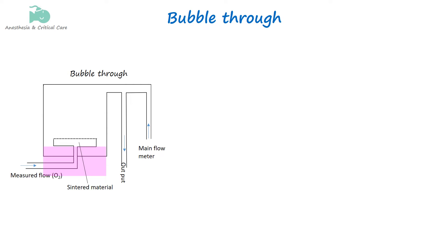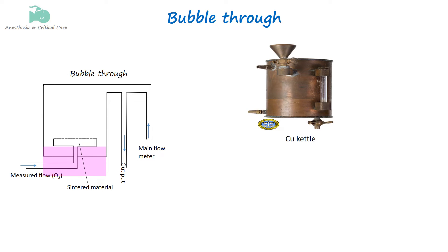In devices like the copper kettle vaporizer, carrier gas is allowed to bubble through the liquid anesthetic. This method, known as the bubble-through system, utilizes agitation and splashing to create smaller bubbles, thereby increasing the surface area of the gas-liquid interface. The size of the bubbles, depth of the liquid, and the velocity of the carrier gas flow all influence the vaporizer's output.